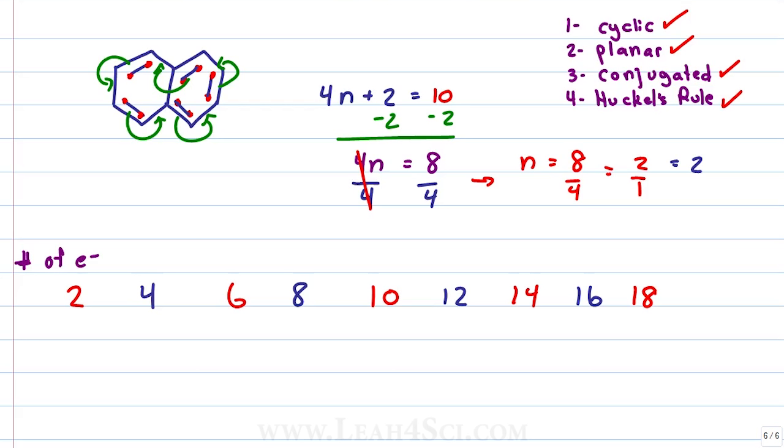Unless we're dealing with radicals, electrons are always in a pair. We have electron pairs in a pi bond and we have lone electron pairs. So let's ask ourselves, if we have 2 electrons, how many electron pairs do we have? 1. If we have 4 electrons, 2. 6 electrons, 3 and so on.